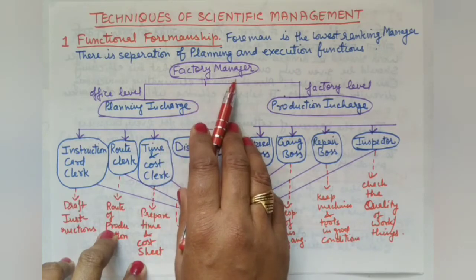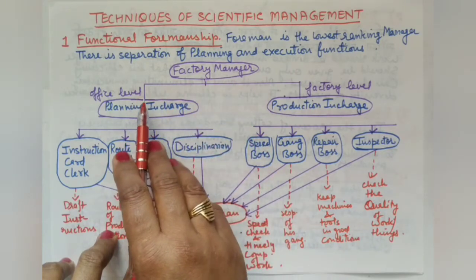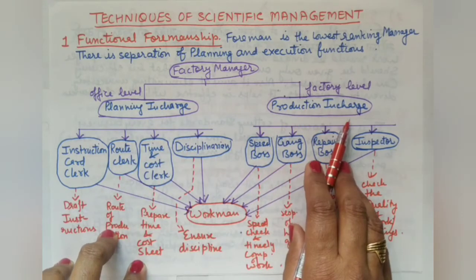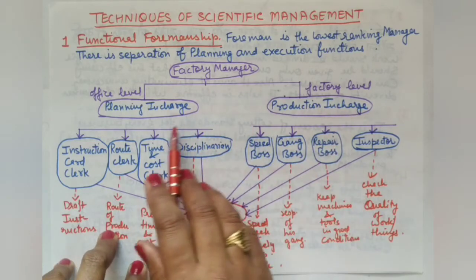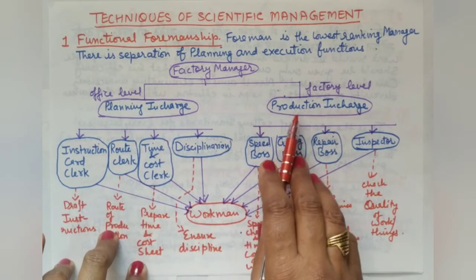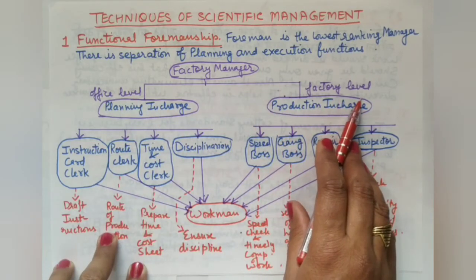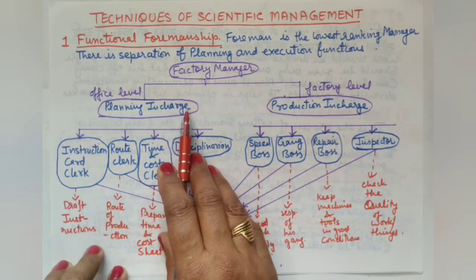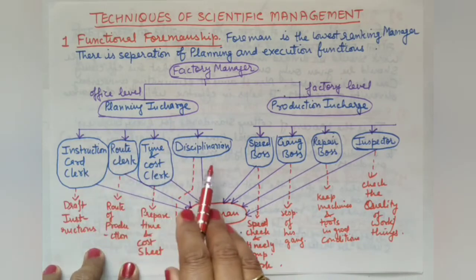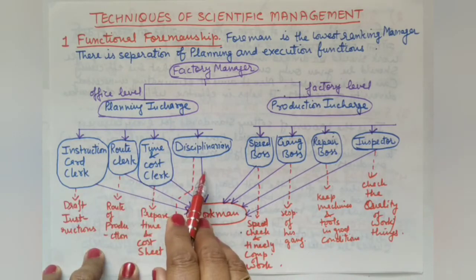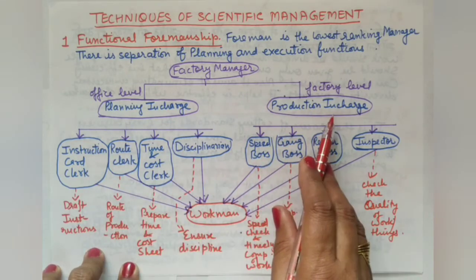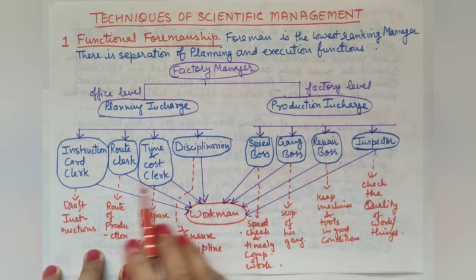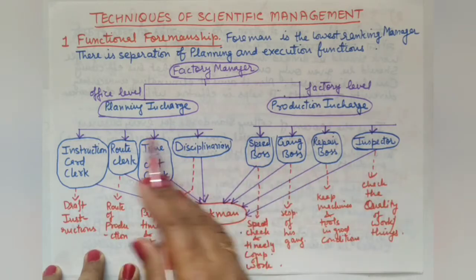Taylor said the factory manager should have two people under him: a planning in-charge and a production in-charge. Planning takes place at the office level, and production at the factory level. At the office level, the planning in-charge has four clerks, and the production in-charge also has four people — making eight people in total.